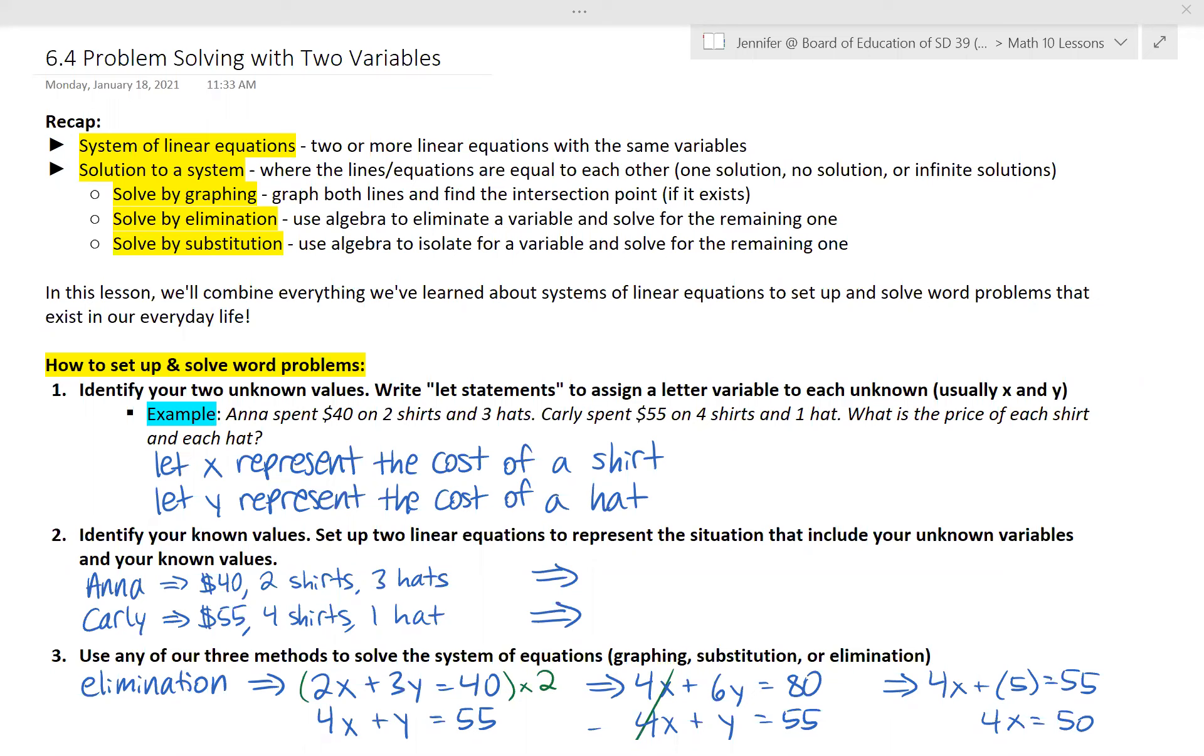So I've listed up everything step by step with an example of how to set up and solve word problems. Your first step is always to identify your two unknown values and you have to assign variables to these unknowns.